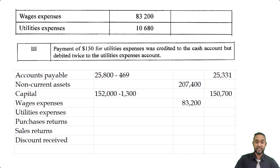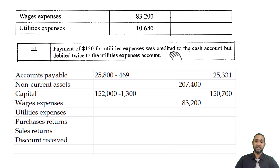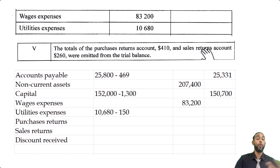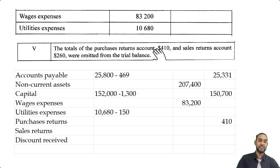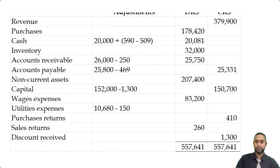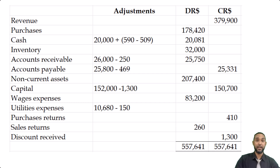Wages had no adjustment. Utilities was error three — we debited it twice, so we put the expense in twice and have to decrease it. Purchases returns and sales returns were both omitted: purchases returns is contra-purchases so we credit $410, and sales returns is contra-sales so we debit it. Then we add discount received as $1,300. When you add up both sides, they balance out — all the errors cancel each other.